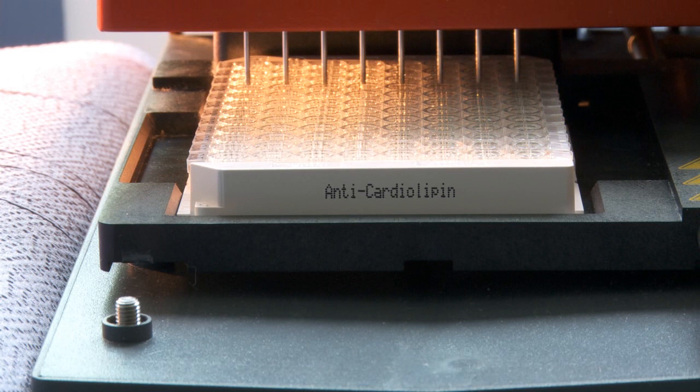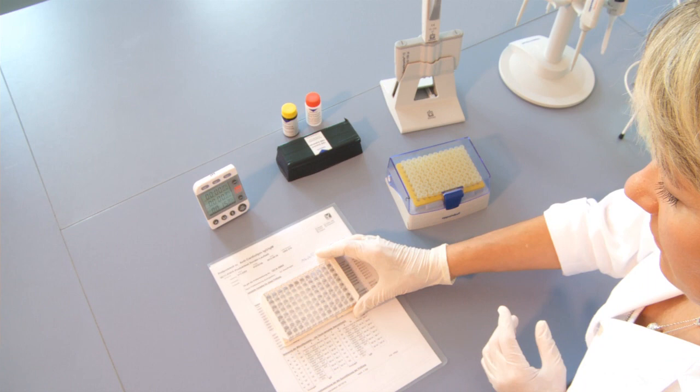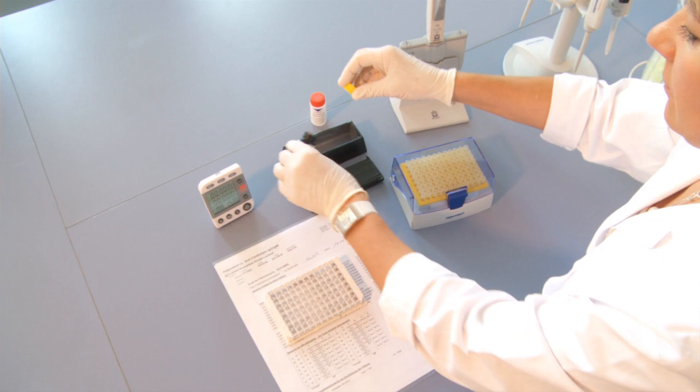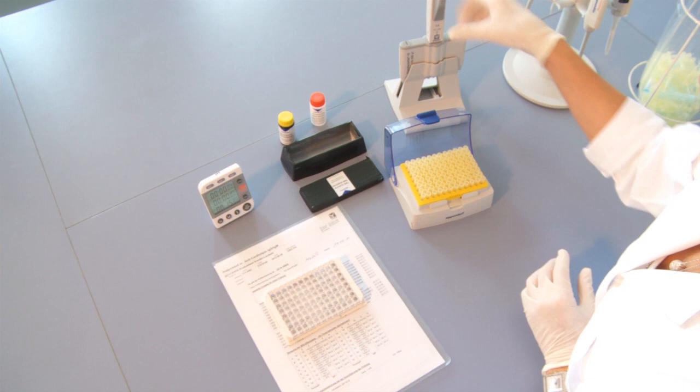The wells are then washed again to remove all unbound antibodies. Next, 100 microlitres of the substrate solution is pipetted into each of the wells. The substrate is 3,3-prime, 5,5-prime, tetramethylbenzidine, which is converted to a blue pigment by the peroxidase.